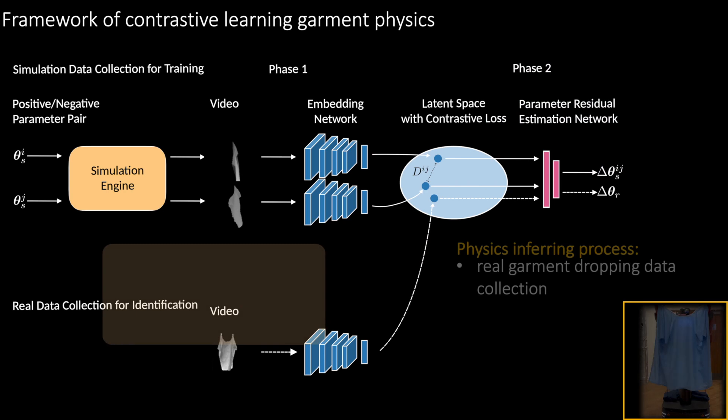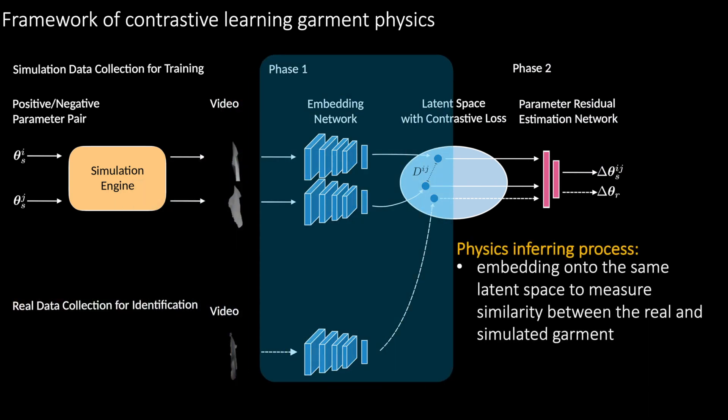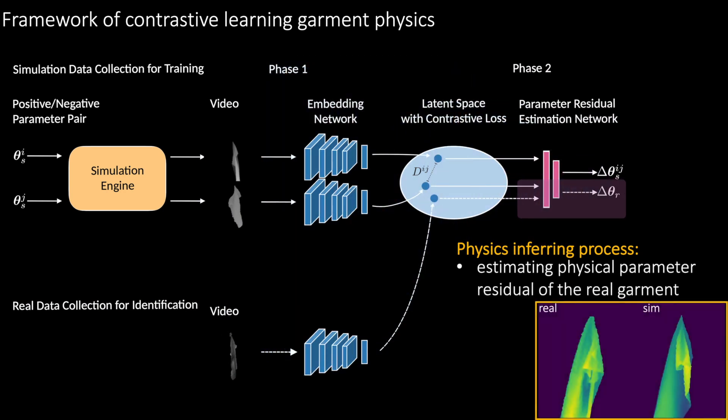The real-world garment observations are then collected and mapped onto the same embedding space to measure the similarity between the real and simulated garments, and the garment physics are estimated.